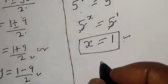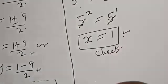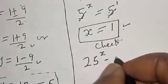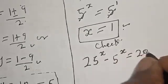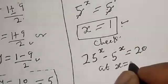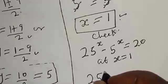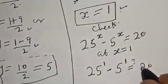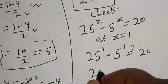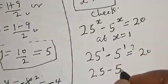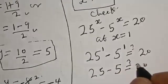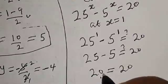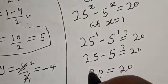Let us check: the given equation is 25 raised to power x minus 5 raised to power x equals 20. At x equals 1, 25 raised to power 1 minus 5 raised to power 1 must equal 20. That is 25 minus 5 equals 20. We satisfy the given equation at x equals 1.